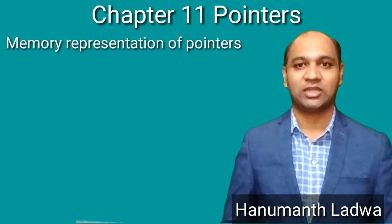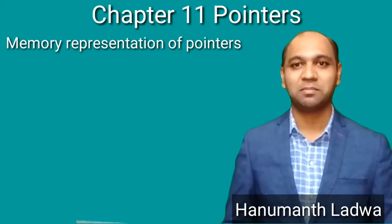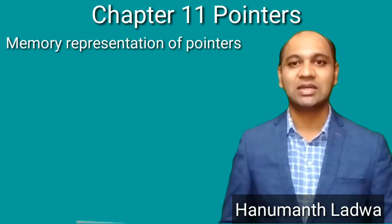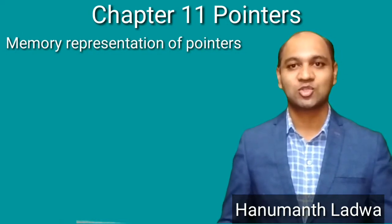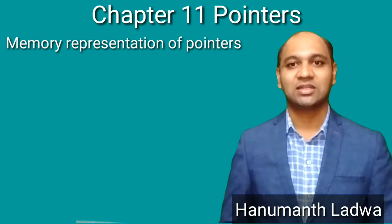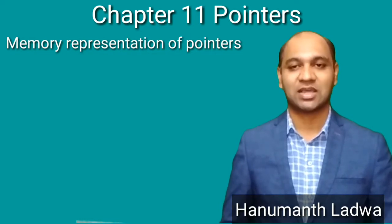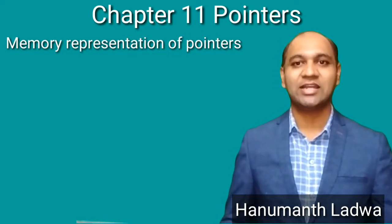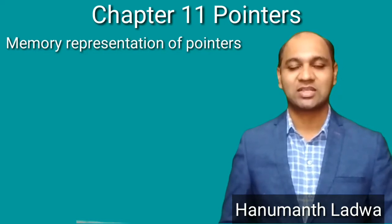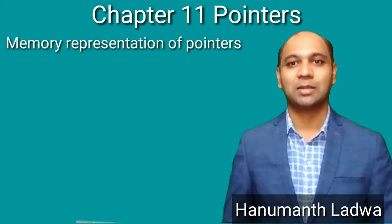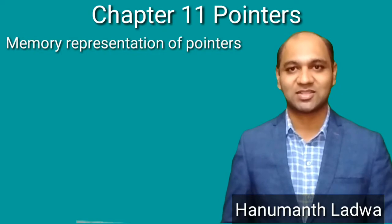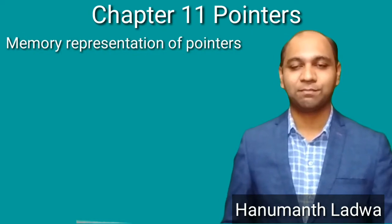Now we will study memory representation of pointers. Before we understand what a pointer means, it is very important to understand how exactly memory is organized. Memory is organized in a consecutive order — consecutive bytes. A byte is the basic unit of storage where data can reside physically. Each byte is identified by a unique number called its address, and data can be fetched from a memory location using this unique identification number.